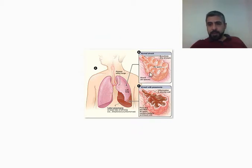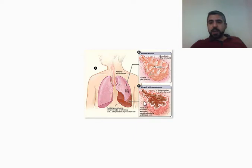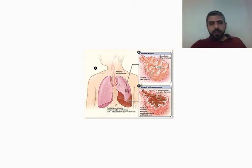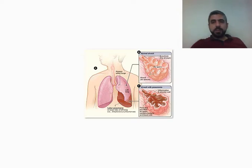For example, you can see here these are the normal alveoli — they contain air. In the abnormal or infected, pneumonic alveoli, the alveoli are filled with secretions. Each lobe of the lung has its own radiologic appearance, and from that appearance we can decide which lobe is involved.